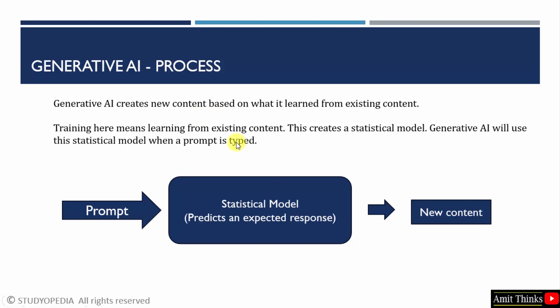This is the process of generative AI. It creates new content based on what it learned from existing content — that means the data it was trained on. Training means learning from existing content. It will create a statistical model that will be used to predict an expected response when you type a prompt.